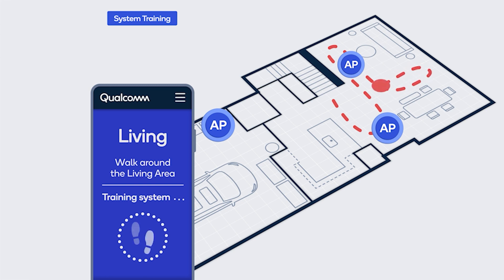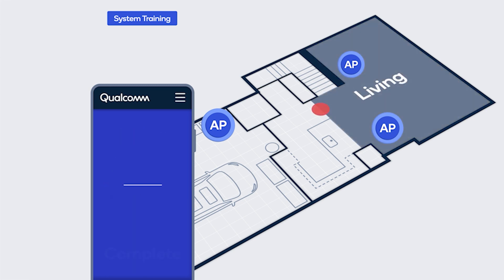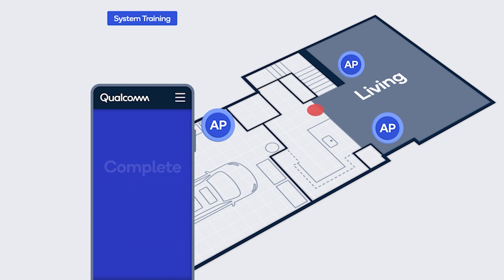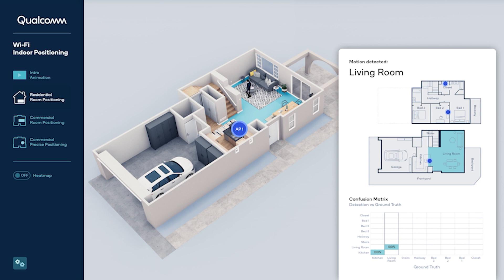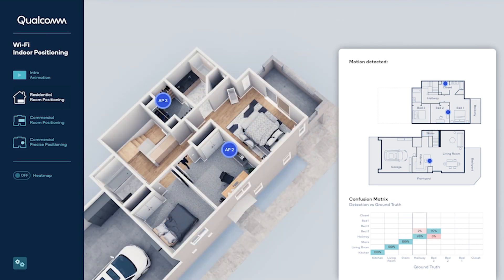Existing solutions are often demonstrated on small floor plans within controlled lab environments and require labels for supervised learning. Our new machine learning-based methods mitigate this problem — they work on large floor plans and only require weakly labeled training data and a floor plan. The two frameworks at the basis of this are OT-ISOMAP and Y-Cluster.